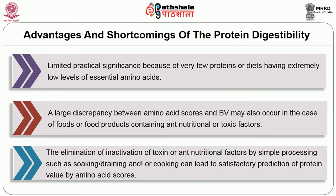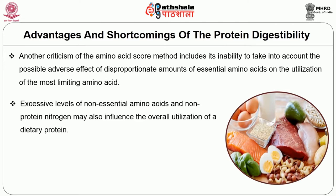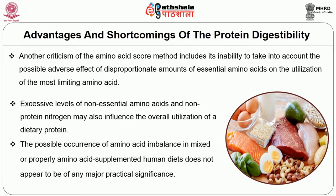For example, soybean has good quantity and quality of protein, but it contains anti-nutritional factors called trypsin inhibitors which can reduce protein digestion; these can be reduced by cooking and other processing methods. Another criticism of the amino acid score method is its inability to take into account the possible adverse effect of disproportionate amounts of essential amino acids on the utilization of the most limiting amino acid. Excessive levels of non-essential amino acids and non-protein nitrogen may also influence the overall utilization of dietary protein. However, the possible occurrence of amino acid imbalance in mixed or properly amino acid-supplemented human diets does not appear to be of any major practical significance.